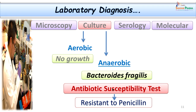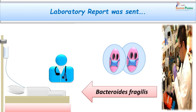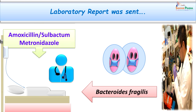The culture was subjected to antibiotic sensitivity and was found to be resistant to penicillin. The report was immediately sent to the physician so that prompt and specific therapy could be initiated. Amoxicillin-sulbactam was given along with metronidazole, as it is an anaerobic infection. Most of the time we expect mixed infection in such cases. The patient was treated promptly and recovered without any events, and was sent home at the end of 10 days.